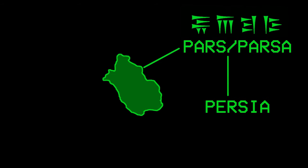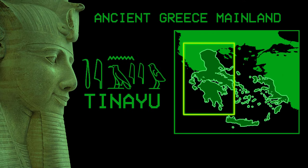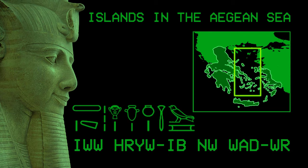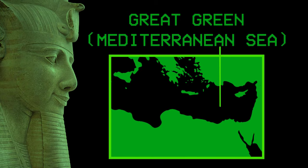It is worth noting that the name of the Pars region is the name from which the name Persia is derived, and it is the name that was used to refer to the Persian Empire over the past centuries. The ancient Egyptians called the ancient Greek mainland Tenayu, while they referred to the islands in the Aegean Sea with the long name Ayu Huru ibn Wadwur, which means 'the islands in the midst of the Great Green.' The Great Green was the name used by the ancient Egyptians to refer to the Mediterranean Sea.